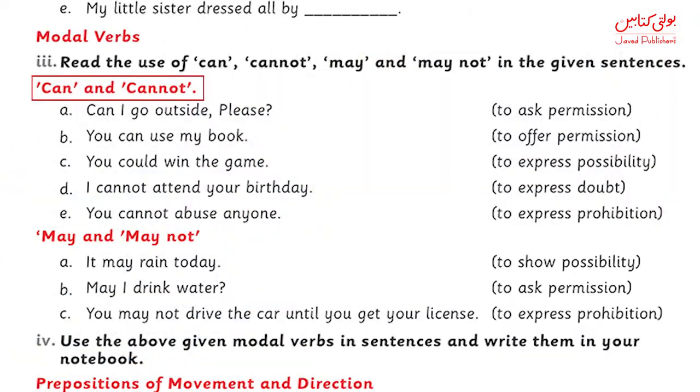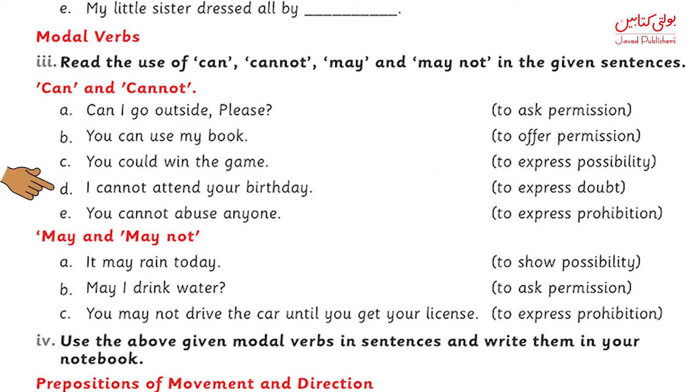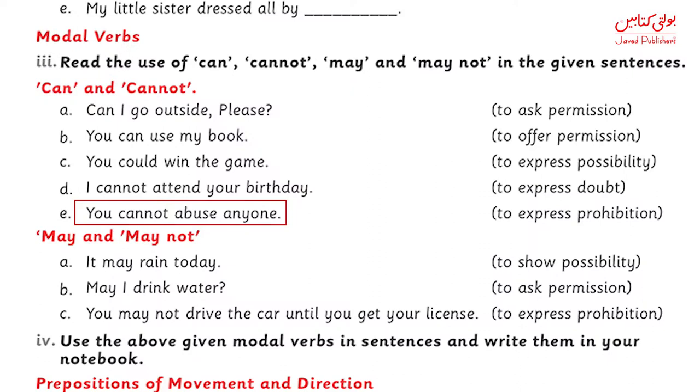Lekin jab aap kehenge I can do this, I may do this, I might not do this — toh possibility ke chances hai, shayad kaam ho jai, shayad na ho. Toh jahan pe koi doubt show karna hota hai, wahan pe hum modal verbs use kerti hai. Can or cannot hum ne use kiya hai for asking permission. For example: Can I go outside? And to express doubt: I cannot attend your birthday. Jab hum kisi cheez par prohibition lagate hai, uske liye bhi can ka istamal kerti hai. For example: You cannot abuse anyone. Abuse means saying bad things about somebody.